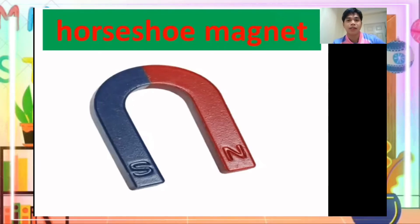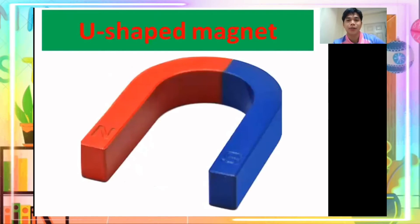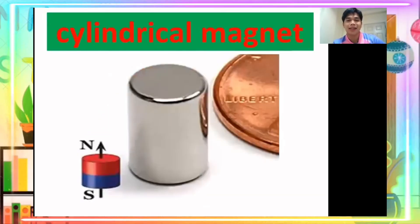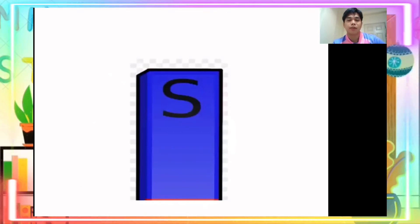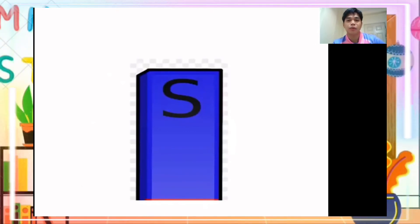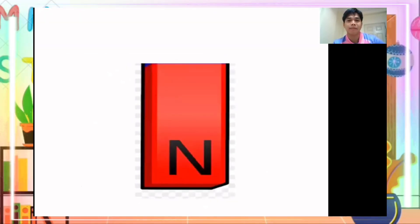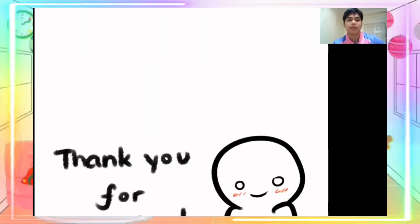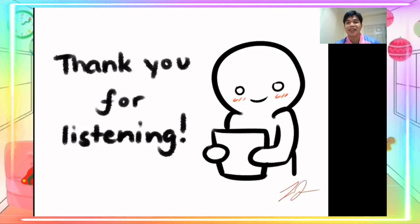How about this one? What type of magnet is it? U-shaped magnet — very good! Next — cylindrical magnet. How about this one? What pole is it — south pole or north pole? South pole. How about this one? North pole — very good! That's the end of our lesson video for today. I hope you learned something.